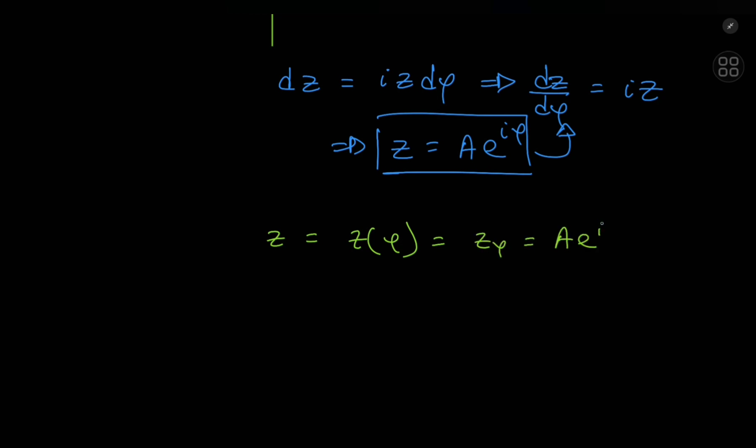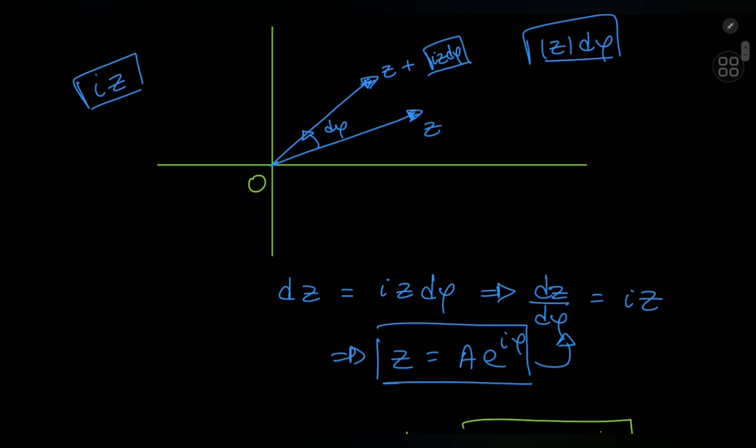z sub phi equals a times e to the i phi. This is a cool looking equation. And if we return to our diagram, we started off with this complex number here. We started off with this vector that wasn't rotated in any sense. We just took this vector as a starting point. So this can be considered as z when phi equaled 0 and we're going to call this z nod.